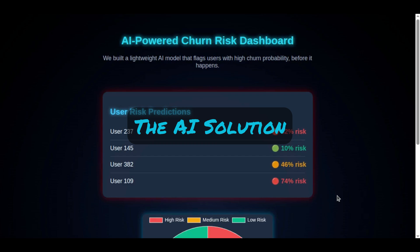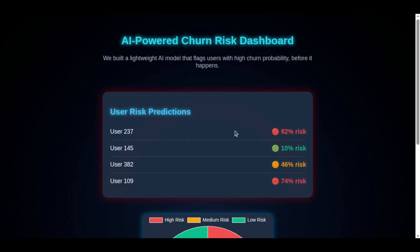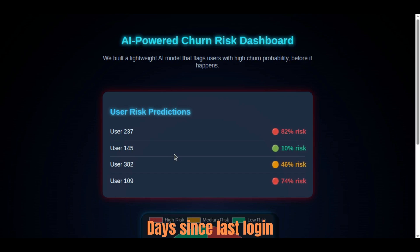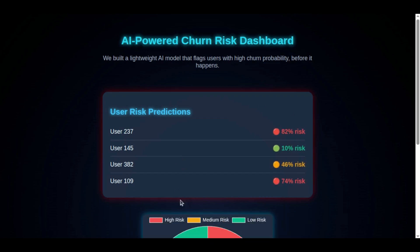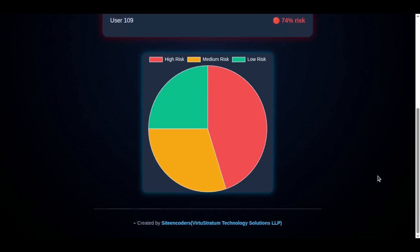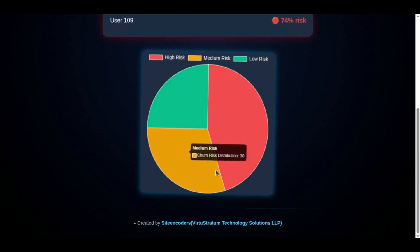We built a lightweight AI model that analyzes behavior patterns and flags users with a high probability of churn in advance. It looks at simple signals like days since last login, product usage drops, billing delays, ticket sentiments, and compliance. Check out this dashboard — this user is at high risk, this user is at low risk, and this user is at moderate risk.